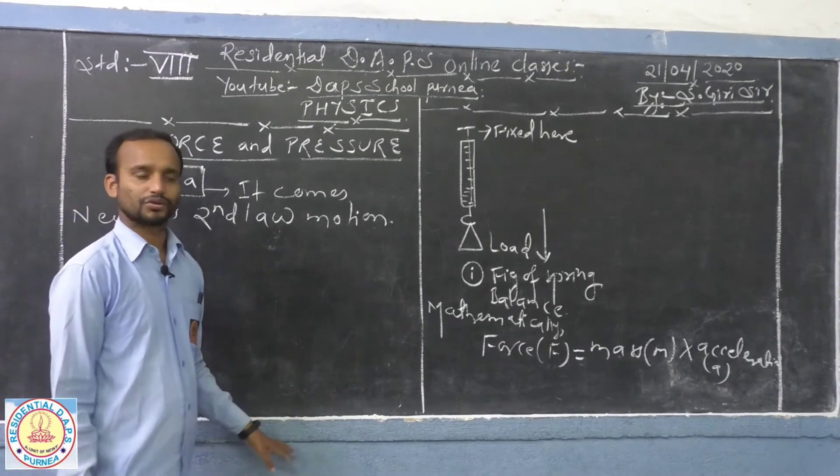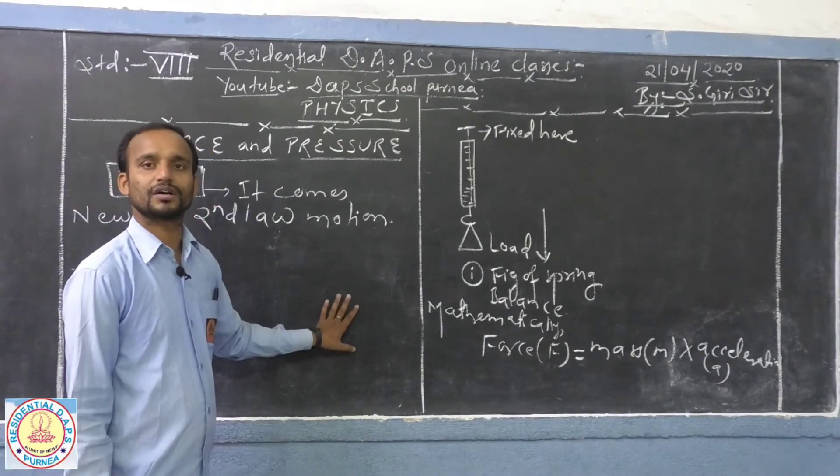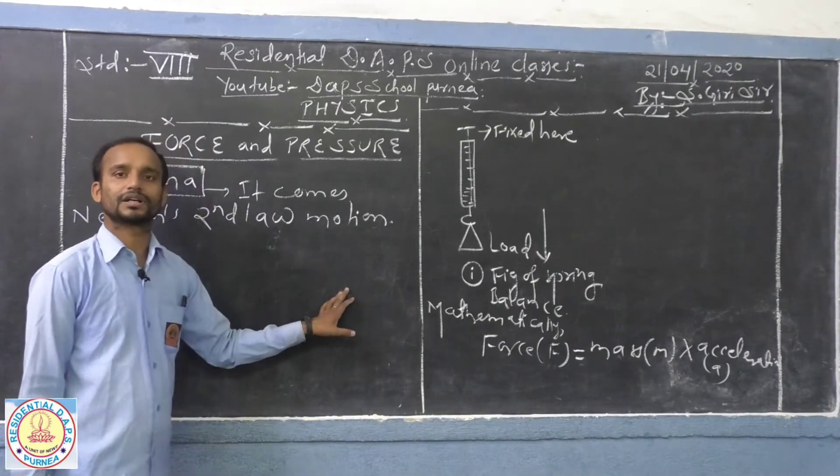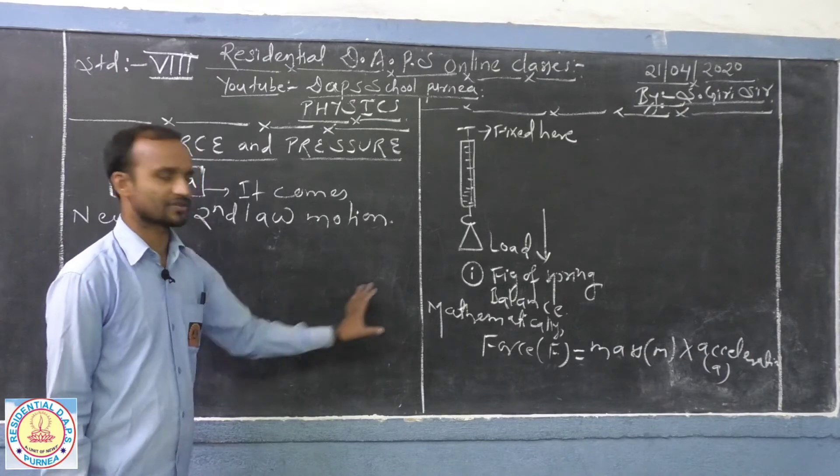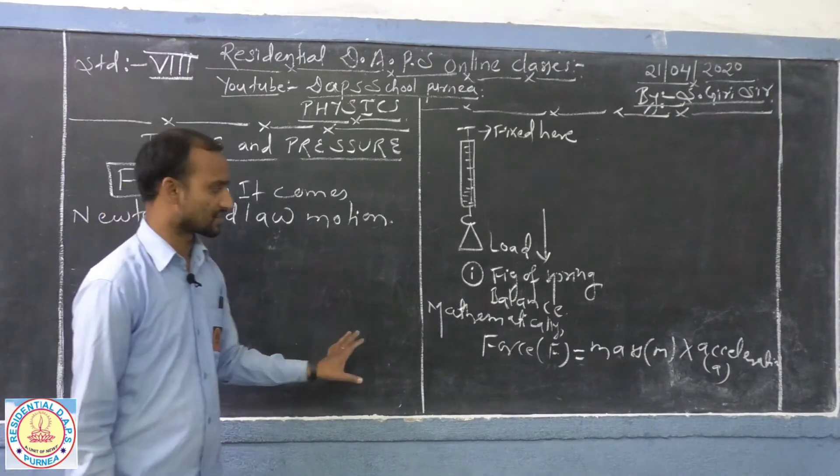What kind of quantity it is - force is a vector quantity because it is strictly dependent on both magnitude and the direction, because it always acts in the direction in which it is applied.